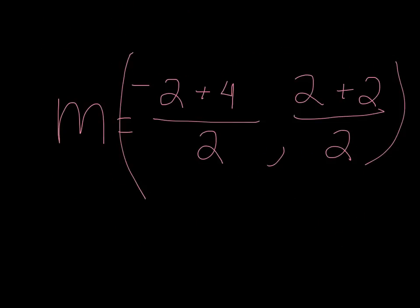Now that we've plugged in all of our values, it's time to solve. So this is just simple arithmetic. Negative 2 plus 4 is 2 over 2. The next point would be 2 plus 2 over 2, which is 4 over 2.